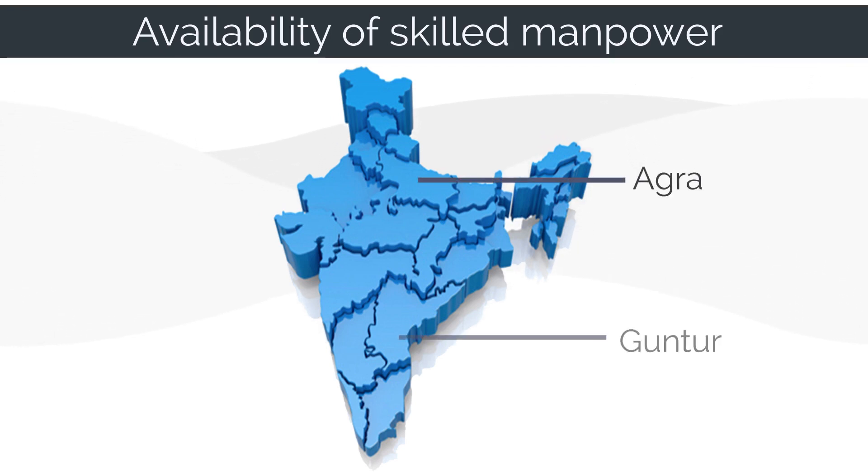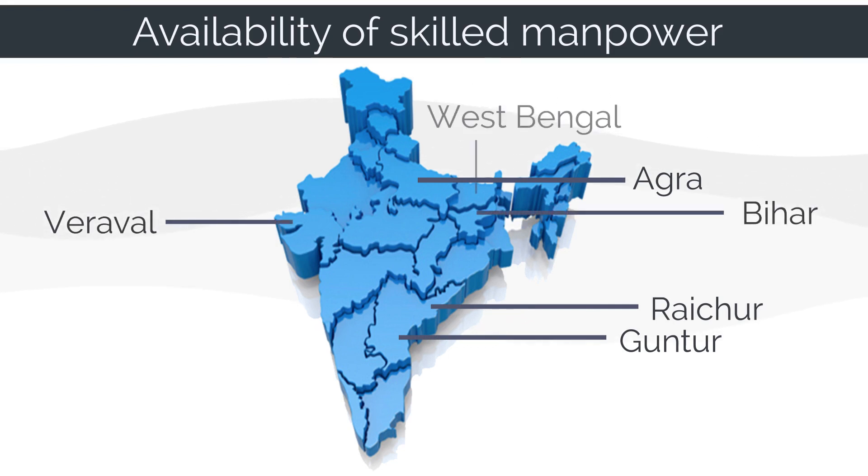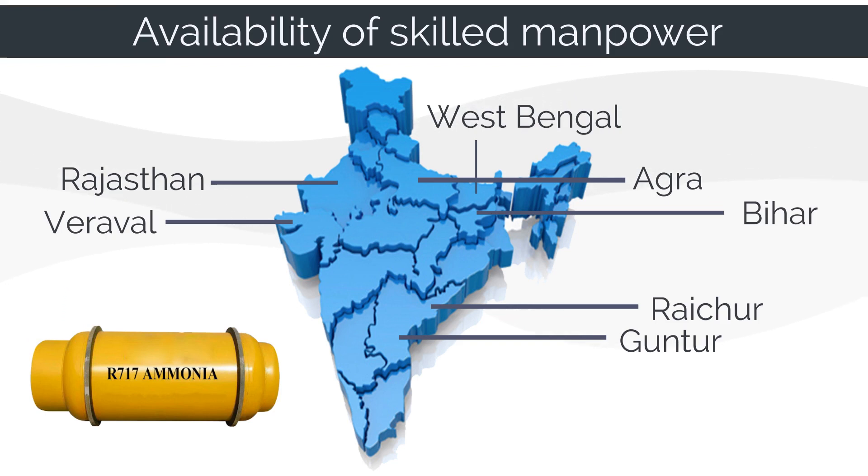For example, cities or interior and rural places of Agra, Guntur, Raichur, Verawal, Bihar, West Bengal, Rajasthan, and many interior places have technical manpower that are skilled only in ammonia systems. So, for these regions it is important to consider this important aspect of skilled manpower. For these small and interior regions, for cold storage projects of size 2000 MTN above, they should consider ammonia as a more preferred system.